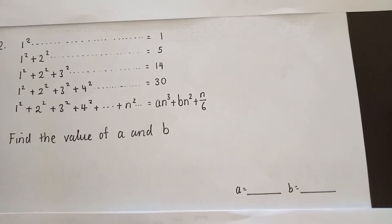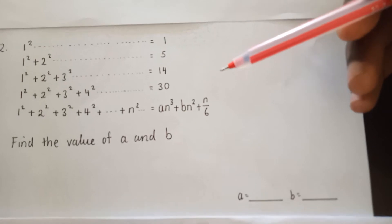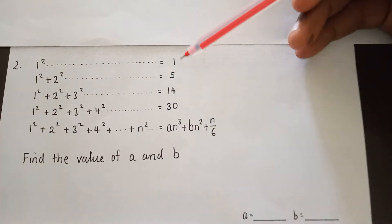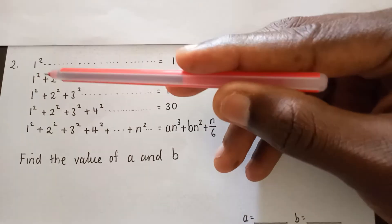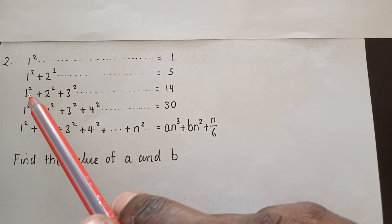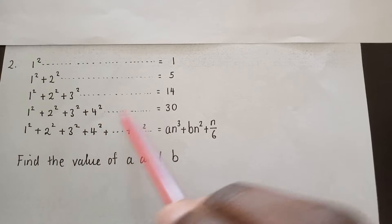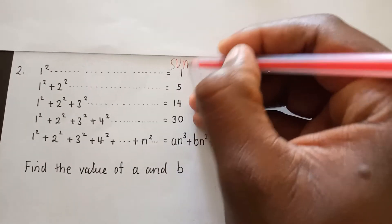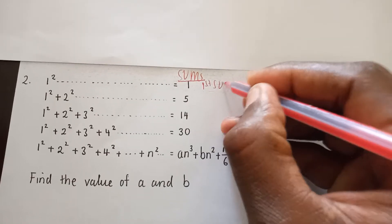My name is Mr. Ishengoma and we are here to look at this sequencing question. If you look properly, the first term gives us the answer one. When you look at the second line, the first term plus the second term gives us five. When you look at the third line, the first, second, and third terms added together give us 14. This means this sequence question is dealing with sums.